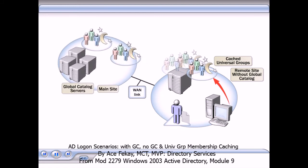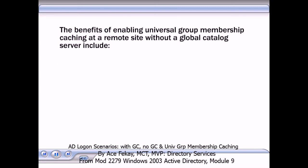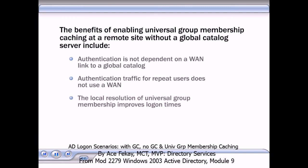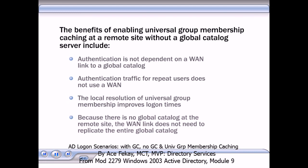The cached information is refreshed every 8 hours by default. The benefits of enabling universal group membership caching at a remote site without a global catalog server include: authentication is not dependent on a WAN link to a global catalog; authentication traffic for repeat users does not use a WAN; the local resolution of universal group membership improves log-on times; and because there is no global catalog at the remote site, the WAN link does not need to replicate the entire global catalog.